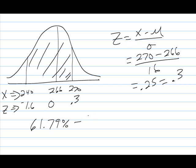And then from that, I subtract the area to the left of negative 1.6, which when we look that up, we get 5.48%. So you do the subtraction and you will get 56.31%.